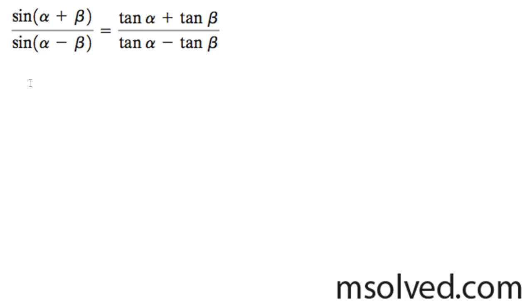Let's prove the left side is equal to the right side in this trig identity. What we're going to do here is start with the numerator, so I get sine alpha cosine beta plus sine beta cosine alpha.